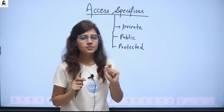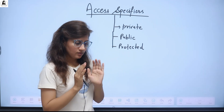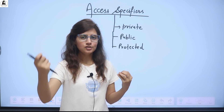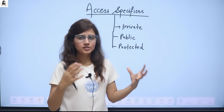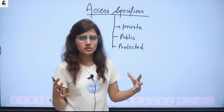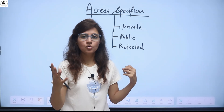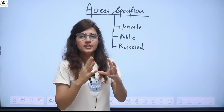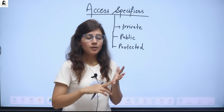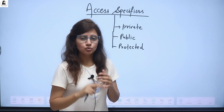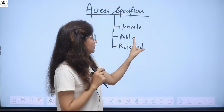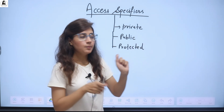Now, we will be discussing access specifiers in this video, because one of the main advantages of using OOPS — object-oriented programming — is security: the data is more secure. We use access specifiers for this. You can make your data private, public, or protected. So, three access specifiers are there in C++: private, public, and protected.